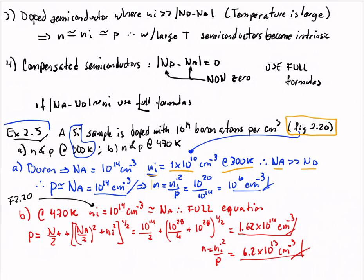With these values known, we are in the regime where p equals NA, which is 10^14. And using the formula n = ni²/p, we get n = 10^20 / 10^14 = 10^6, and we're done. Now for part b, we need to do exactly the same, but we need ni at 470 Kelvin.